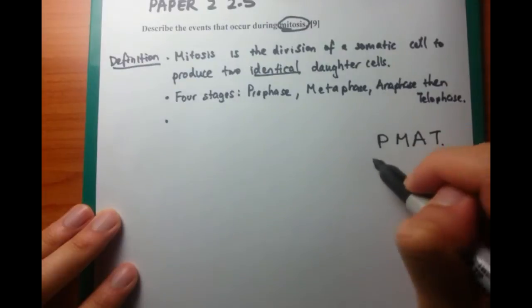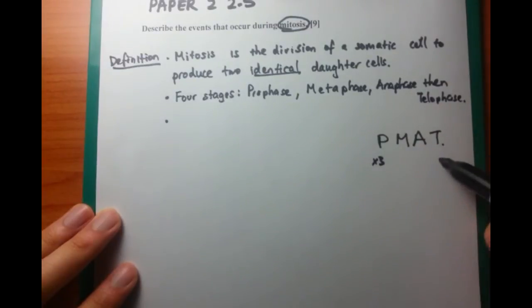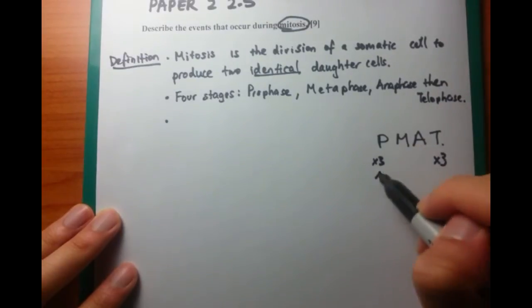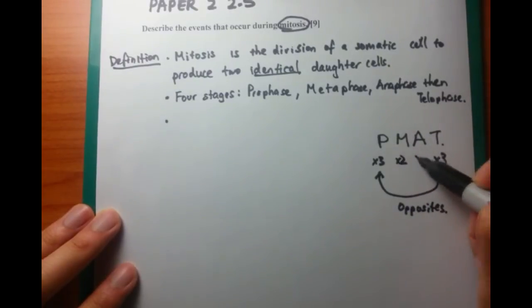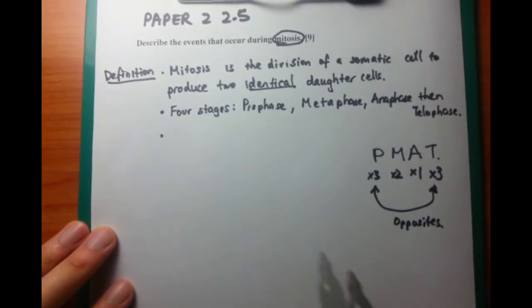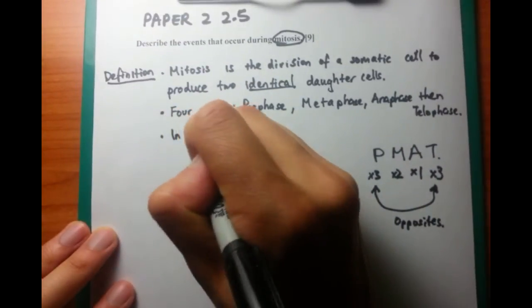First, in prophase, things appear and things disappear. That's what you need to know about. So there are three things that appear. There are three things you need to think about in prophase. And there are three things that you need to think about in telophase. In metaphase, there are two things. Anaphase, one thing, just as I've drawn here.